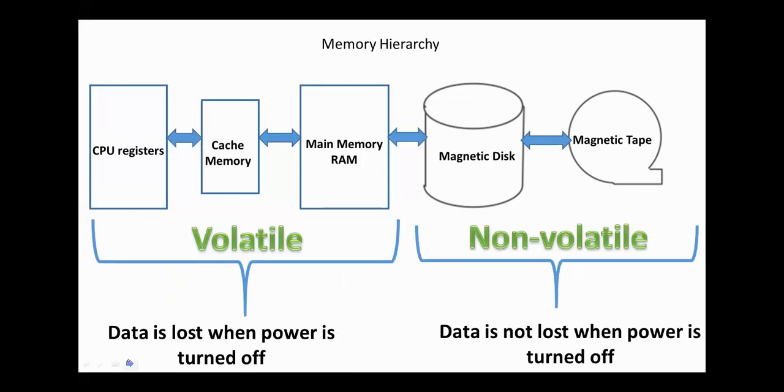The first three types of memory in the hierarchy - CPU registers, cache memory, and RAM - are volatile memories. In these memories, data is lost when the power supply turns off.